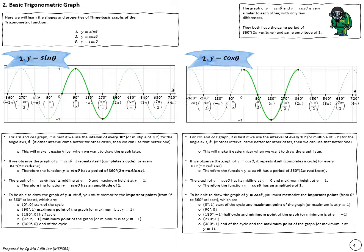The next part is the basic trigonometric graphs of sine, cos, and tangent — you've done this before. Sine and cos are very similar to each other, differing only in shape. Sine has this shape and cos has this shape; they have different minimum and maximum positions. For both graphs it's best to use an interval of 30 degrees when drawing them. Both graphs complete their cycle every 360 degrees, giving a period of 360 degrees. It's important to remember the key points because we'll use them to draw graphs later.